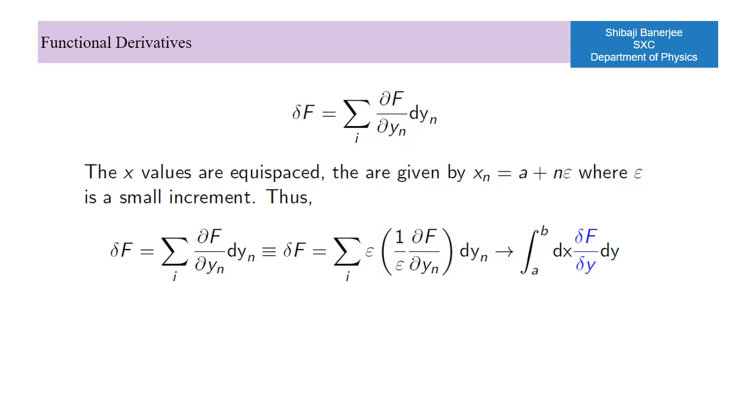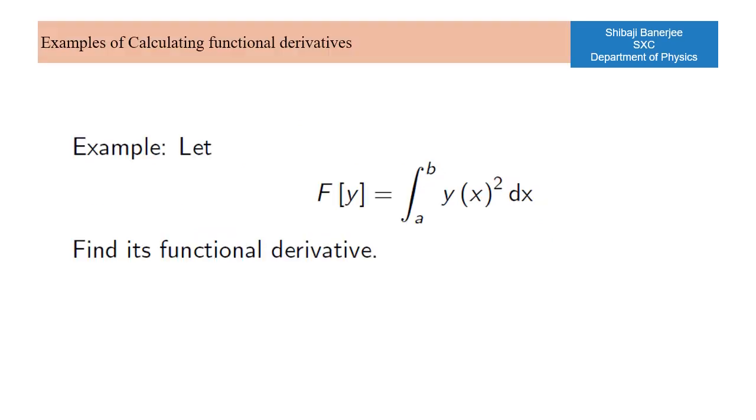The most general method of finding the functional derivative is thus to compute the functional increment and arrange it up in the sandwich form. The derivative marked in blue can then be read up as the functional derivative.